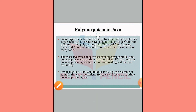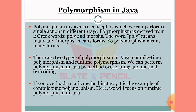Overloading uses the same method name with different parameters. Overriding also uses the same name but is applied between a parent and child class. We can explain the method of polymorphism in Java through both method overloading and method overriding.